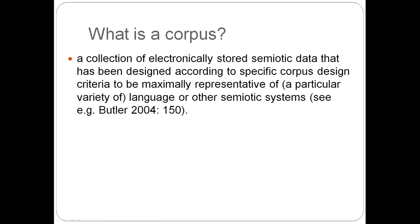Let's break this definition down. A collection of electronically stored semiotic data — so a corpus is a collection of data, and the form of the data is electronic so that it can be processed by software. The data is semiotic, which means meaning-making.